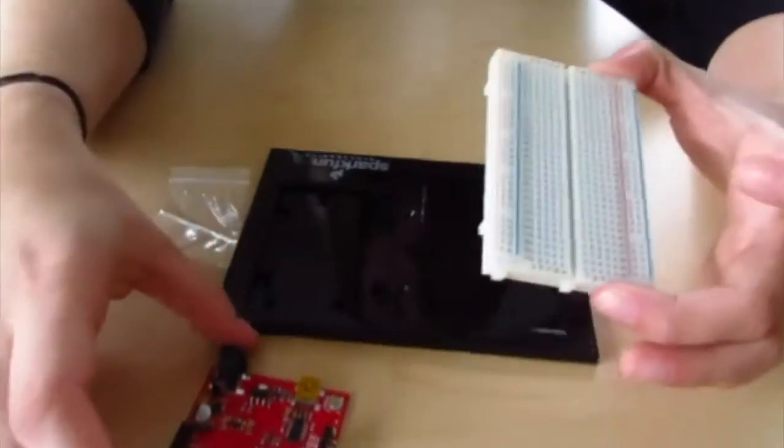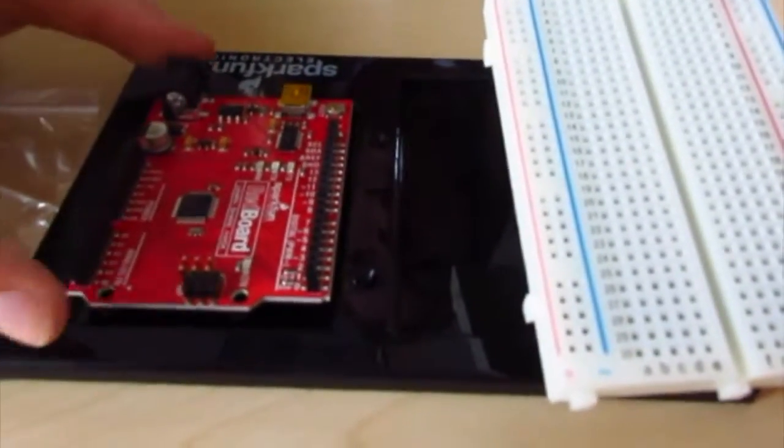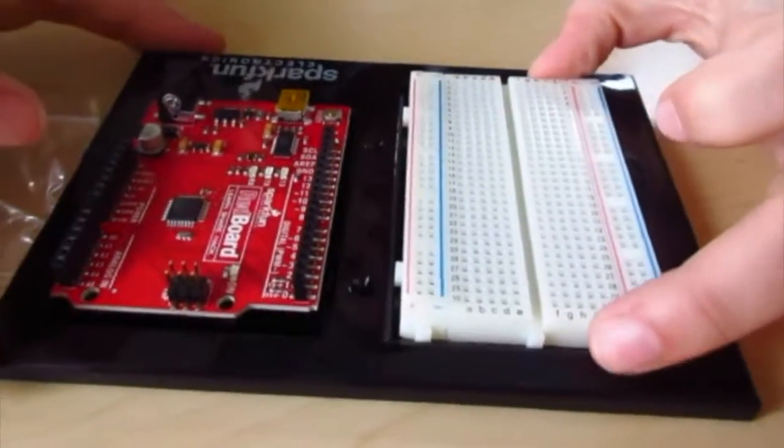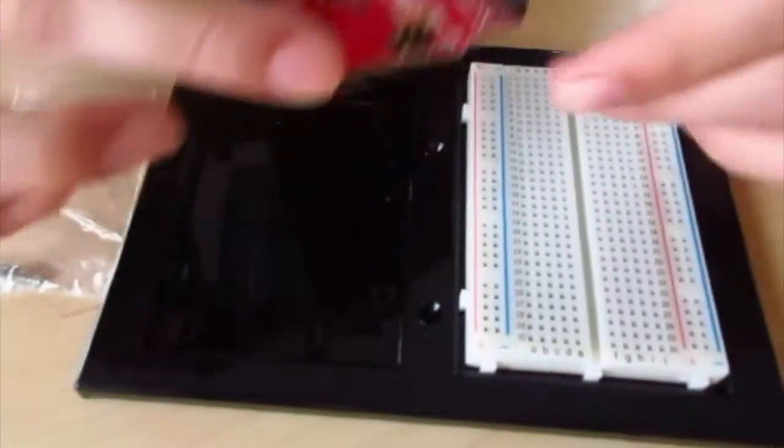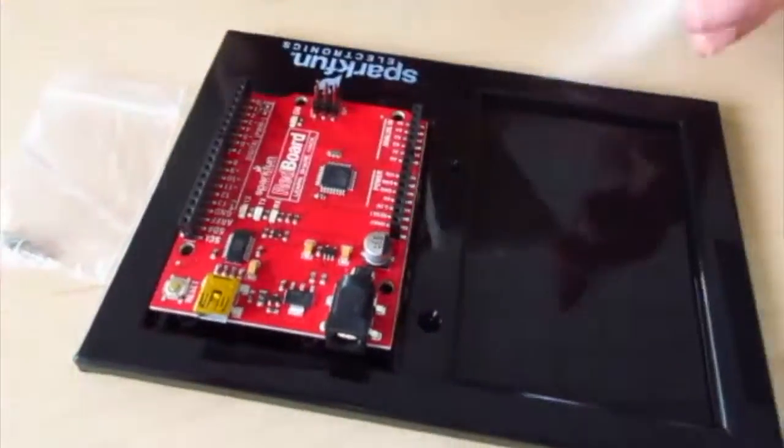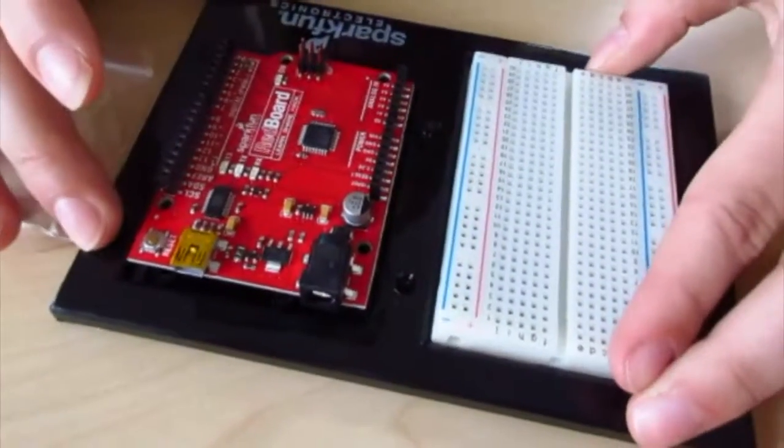The placement of the Arduino and breadboard go as follows. The Arduino goes in the smaller section where the breadboard goes in the larger section. The orientation of the Arduino and of the breadboard does not matter.